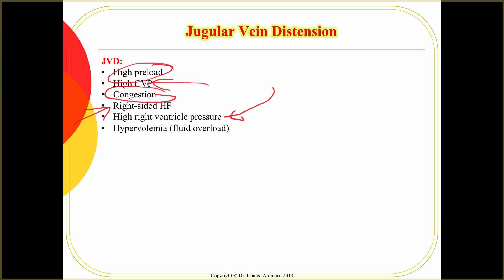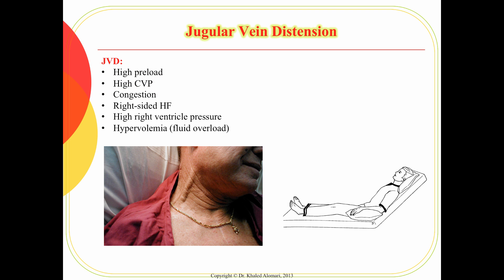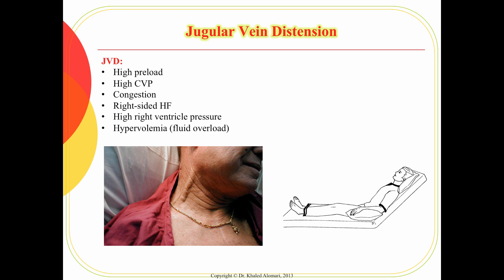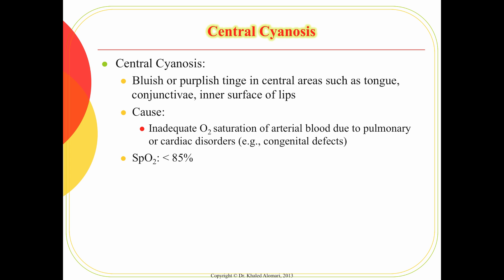The high volume in the right ventricle means pressure within the right side of the heart will be high as well, and it can indicate high volume overall. Something important to keep in mind: JVD is not significant until the patient is sitting up. If you see it in the supine position, bring the patient up to 45 degrees — if you can still see JVD at that point, then it is a significant finding.